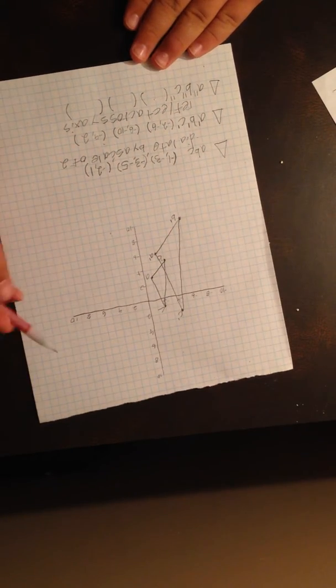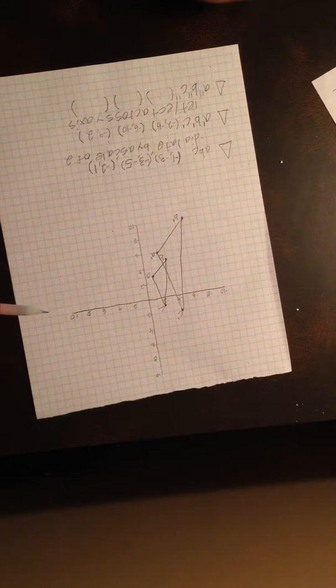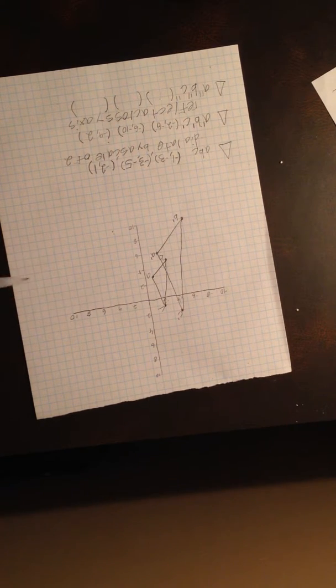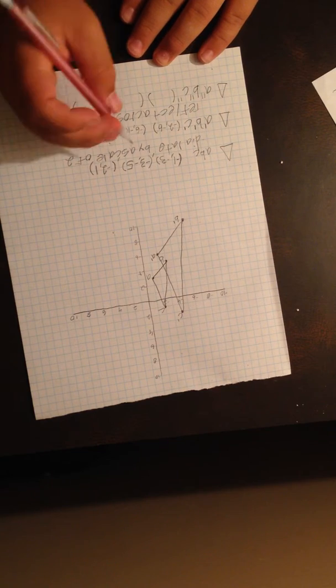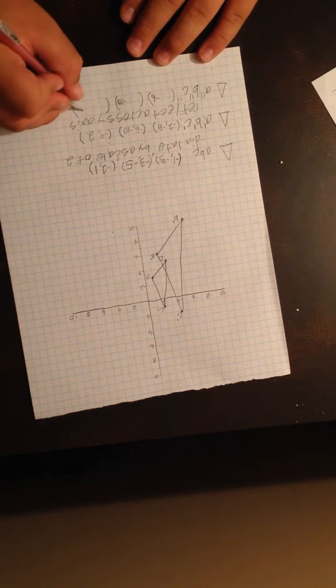So when we flip it across the y-axis, the y would stay the same, and the x would go to the exact opposite. So negative 6, negative 10, and 2.